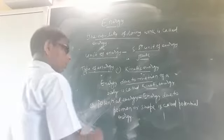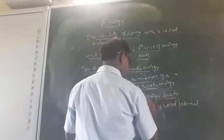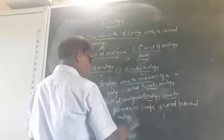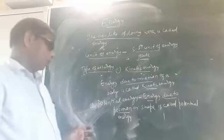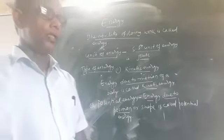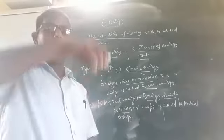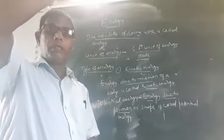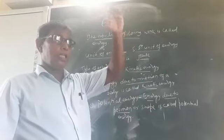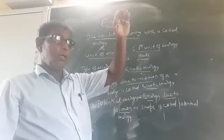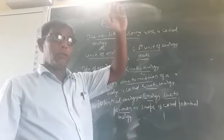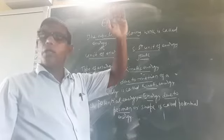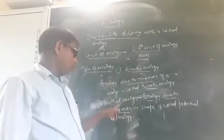Now, potential energy, energy due to change in shape or position is called potential energy. Suppose that anything is lifted through a height above the earth's surface. Position means above the earth's surface. What is the height attained by the object? That is the position. This energy acquired by the object due to height attained by the object, that is change of position, so this is known as potential energy.